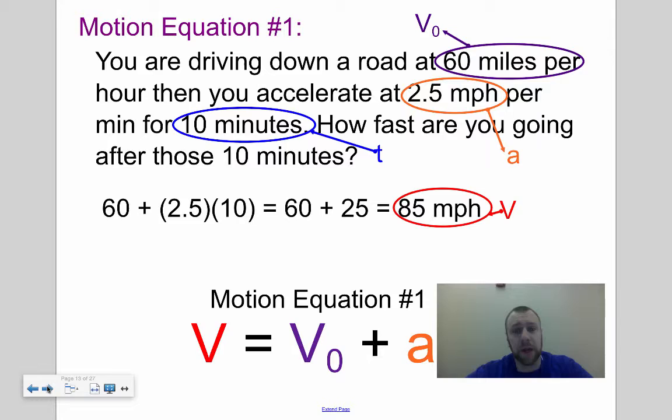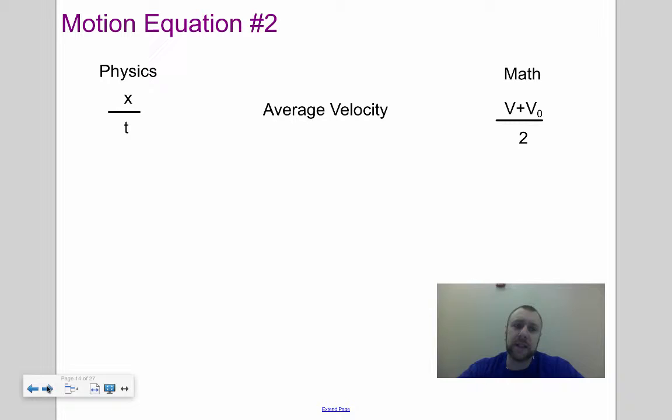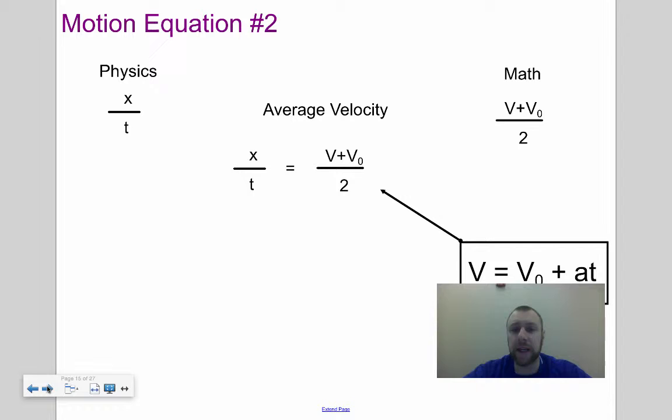The second one talks about average velocity. Physicists say it's x over t, or the distance that we travel divided by the time. Mathematicians say it's our final velocity plus our initial velocity divided by 2, average. We add the two things together, divide by 2. Motion equation number two is melding both of those, saying when these are equal.